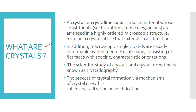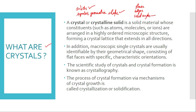Crystals are solids which possess a regular geometrical shape. They are bounded by faces which lie parallel to the planes of atoms in the crystal structure. In addition to faces, crystals contain edges and solid angles arranged in a regular order. So crystals are solids, they have a regular geometric shape, they contain faces, edges, and solid angles — also called vertices.